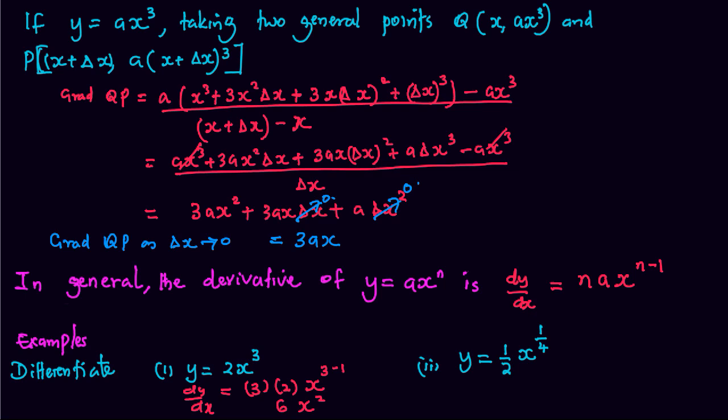In the second case, dy over dx is equal to a quarter times a half x to the quarter minus 1, which gives us 1 over 8 x negative 3 quarters.